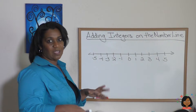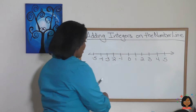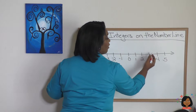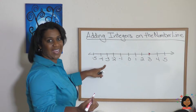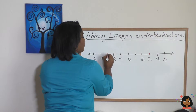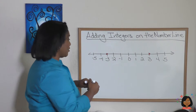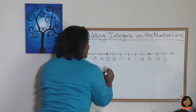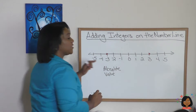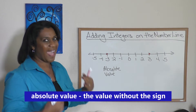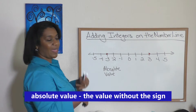Now let's talk about a few concepts related to our number line. You've been introduced to positive numbers and negative numbers. We know that a number over here would be a positive three, and if we went over here to its negative we would call this negative three. But we have something in math called absolute value. Absolute value is the value of a number without its sign.